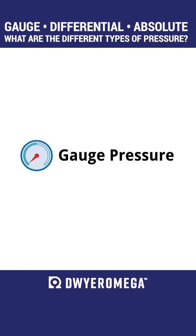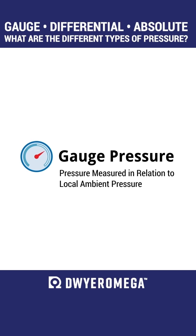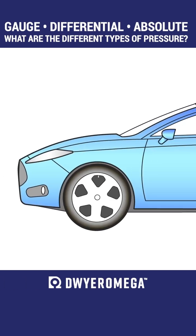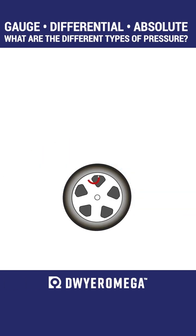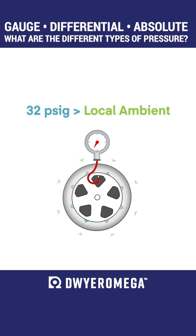Gauge pressure would be defined as a pressure which is measured in relation to local ambient pressure. A car's tire pressure would be 32 psig above local ambient pressure.